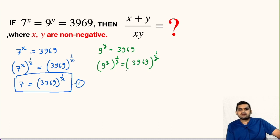From here y and y will get cancelled and we will get 9 = 3969^(1/y) and let us name this as equation number 2.